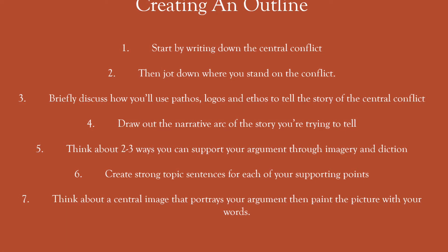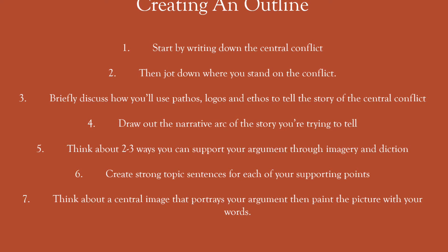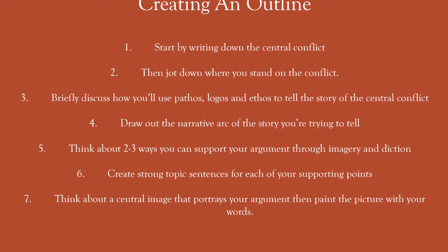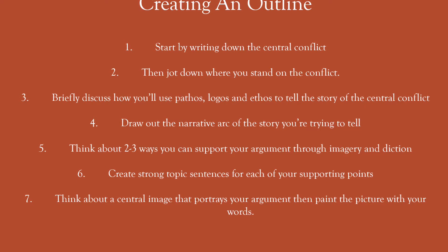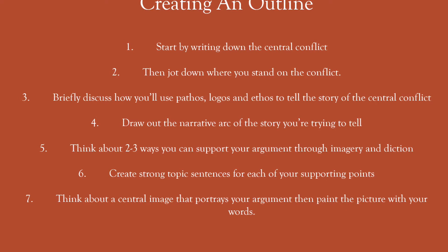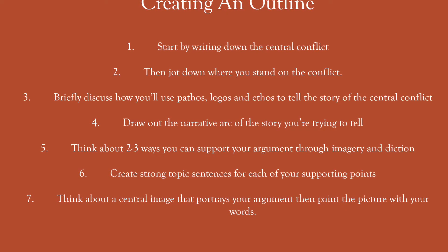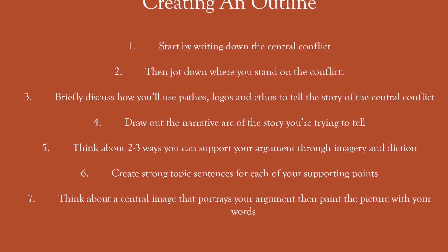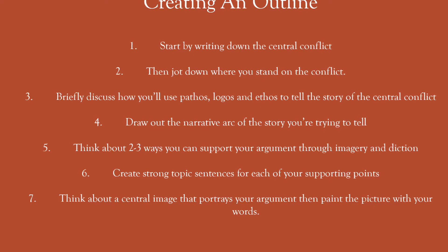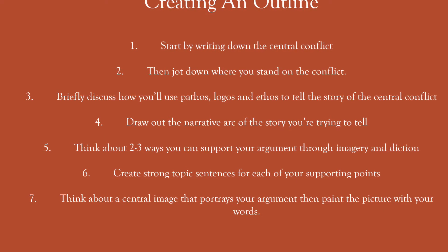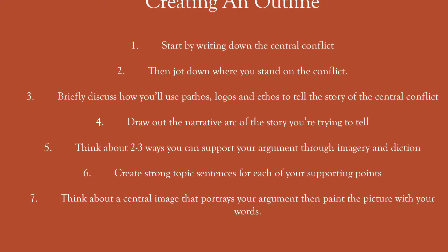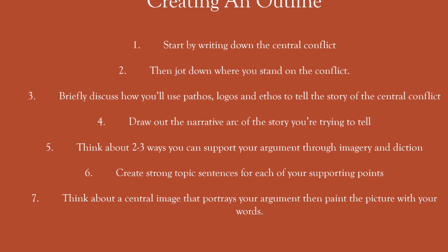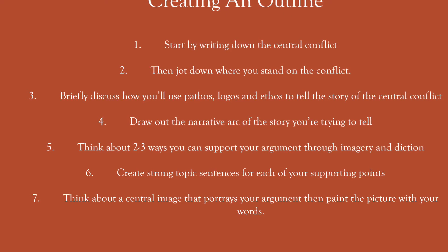Let's create an outline for it. You want to start by writing down the central conflict, then jot down where you stand on the conflict. Go into briefly discussing how you use pathos, logos, and ethos — that's the rhetorical triangle we talked about earlier — to tell the story of the central conflict. Draw out the narrative arc of the story you're trying to tell. Then think about two to three ways you can support your argument through imagery and diction — the pictures you create with your words and the words you choose. Create strong topic sentences for each of your supporting points. Finally, think about a central image that portrays your argument, then paint the picture with your words.